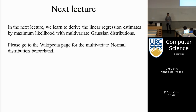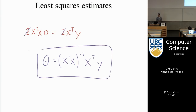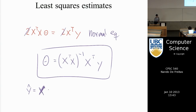The equation we derived has a famous name: the normal equations. That's XᵀXθ̂ = Xᵀy. Also, predictions on the training set are ŷ = Xθ̂, and because θ̂ = (XᵀX)⁻¹Xᵀy, this equals X(XᵀX)⁻¹Xᵀy. We often call this the hat matrix H: ŷ = Hy, because it 'puts a hat on y'. And θ̂ in particular is called the least squares estimate.